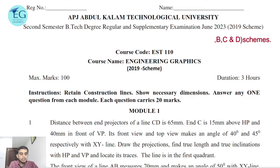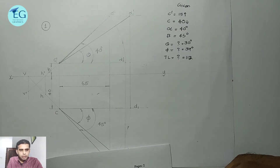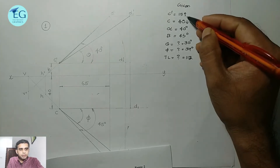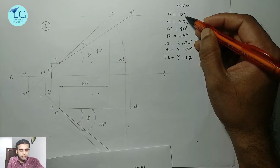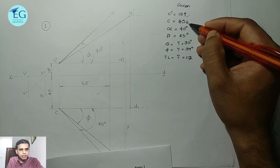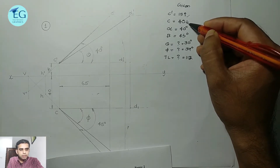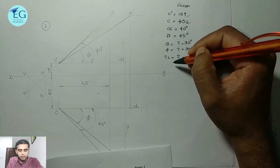The line is in the first quadrant. This is a simple question. Given data: C dash is 15 mm above HP, that is 15 mm above the XY line. C is 40 mm in front of VP, that is 40 mm below the reference line.